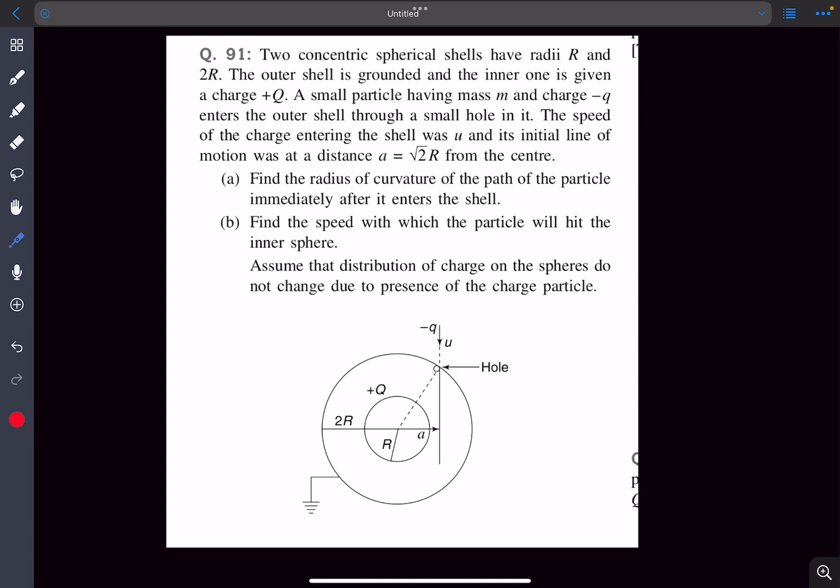Welcome back everyone. In this question we have two concentric spherical shells having radius r and radius 2r. The outer shell is grounded and the inner one is given a charge of plus q.